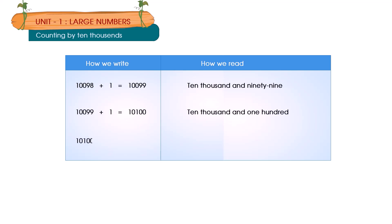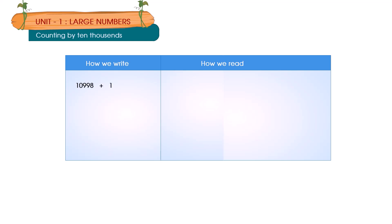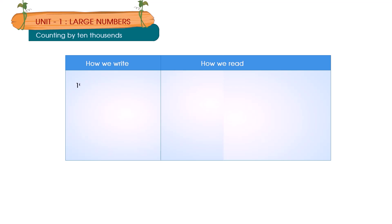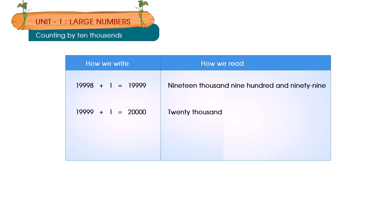10,100 plus 1 is equal to 10,101. 10,998 plus 1 is equal to 10,999. 10,999 plus 1 is equal to 11,000. 19,998 plus 1 is equal to 19,999. 19,999 plus 1 is equal to 20,000. 20,000 plus 1 is equal to 20,001.